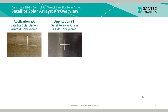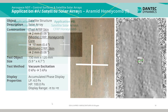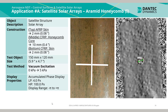Here is an overview of laser shearography applications used for the inspection of satellite solar array panels. Application A is of an aramid honeycomb and application B is of a carbon fibre reinforced plastic honeycomb. A localised disbond of 12.6 mm is detectable using laser shearography through vacuum excitation with a pressure jump of 5 kPa.